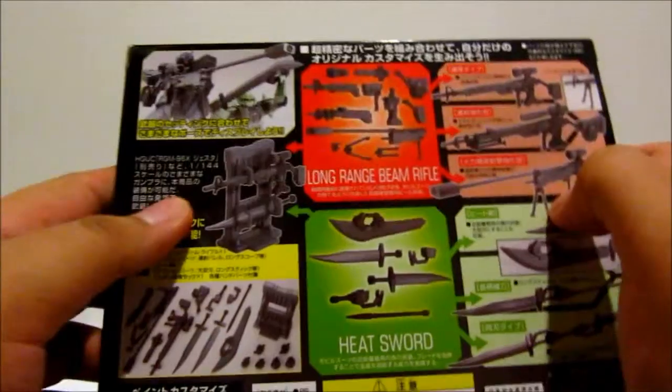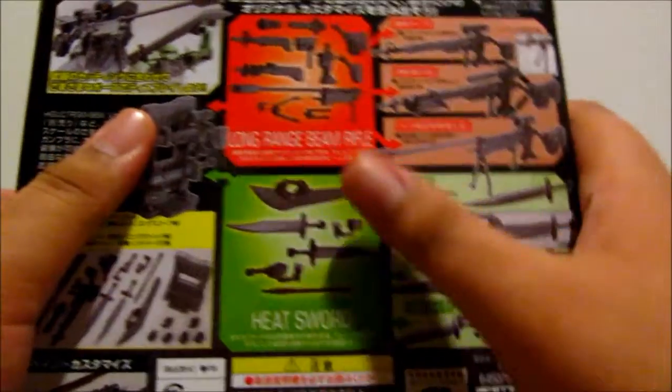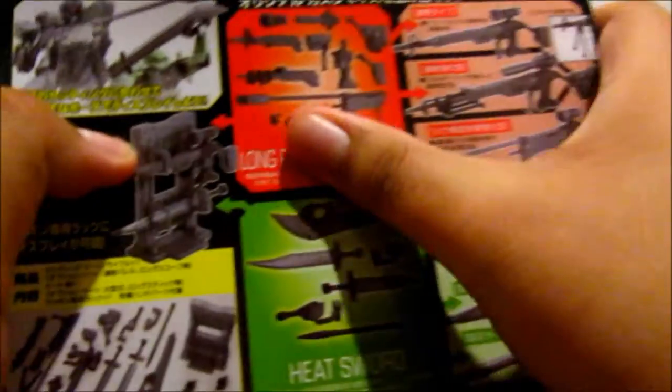And on the back it tells you all the stuff that it comes with like the long range Beam Rifle and all of the extra parts that come with it.